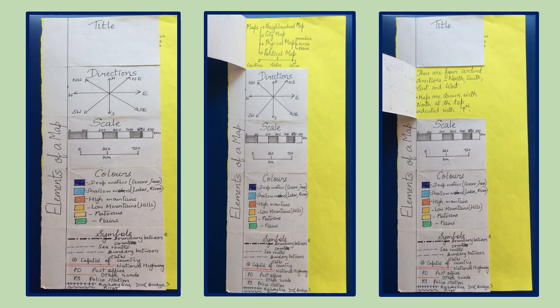The title of a map highlights whether it is a neighborhood map, city map, a physical map for physiographic features or relief features, and political map that represents countries, states and cities.